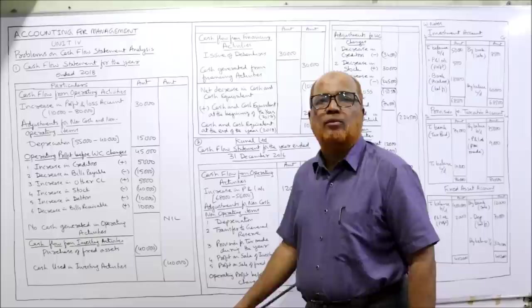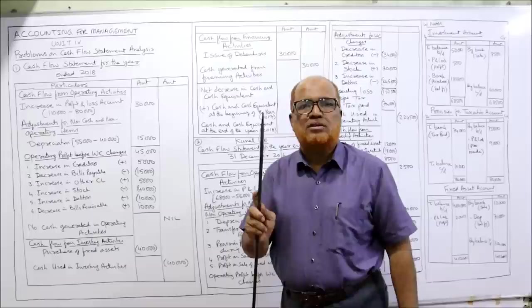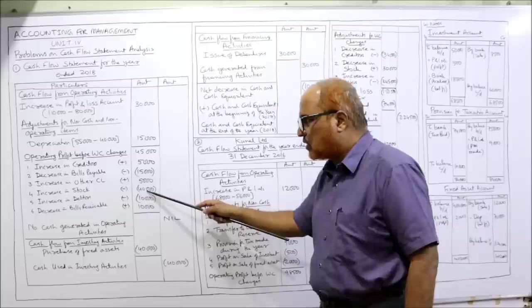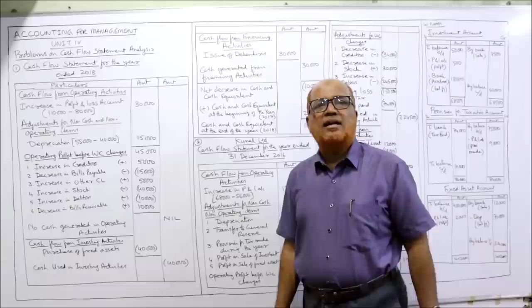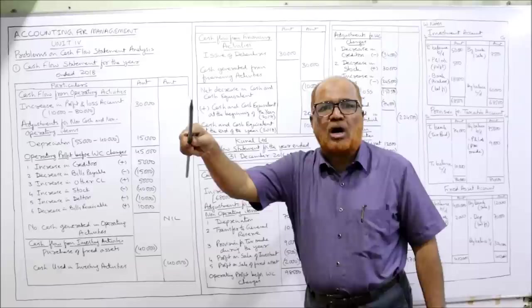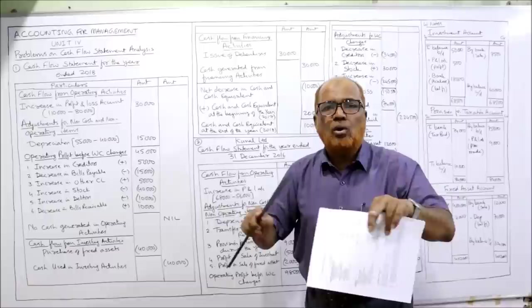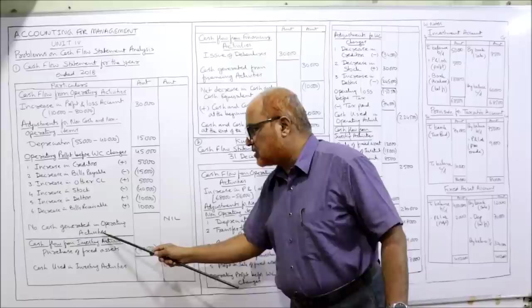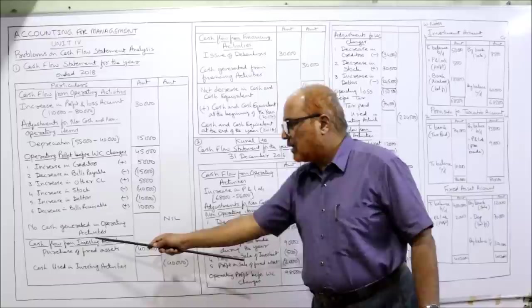Remember: increase in current liability and decrease in current asset should be added; the opposite should be deducted. Now totaling: 45,000 plus 5,000 minus 15,000 plus 5,000 minus 40,000 minus 10,000 plus 10,000 equals nil. That means there is neither cash generated nor used — no profit, no loss; all cash inflows and outflows are the same. So no cash generated in operating activity — nil.